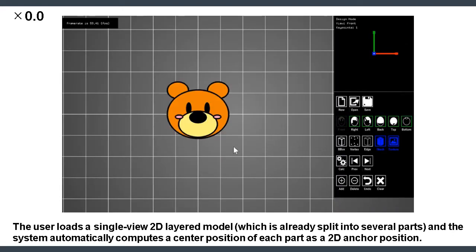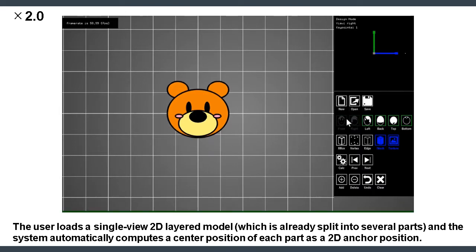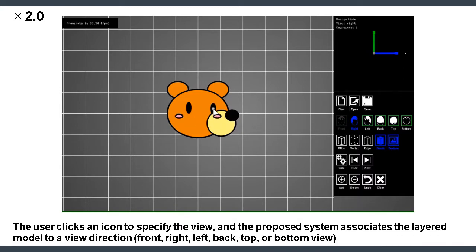First, the user loads a single-view 2D model and the system automatically computes a center position of each part as a 2D anchor position. The user clicks an icon to specify the view, and the proposed system associates the layered model to a view direction.